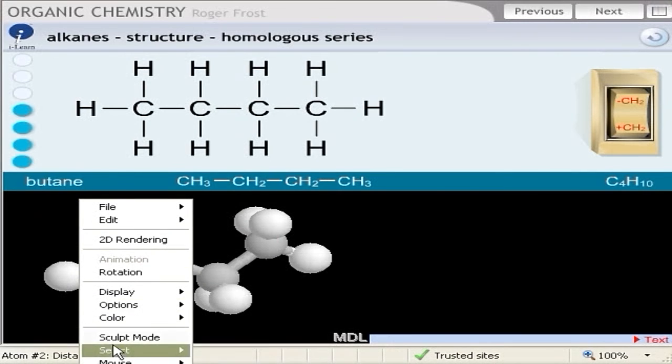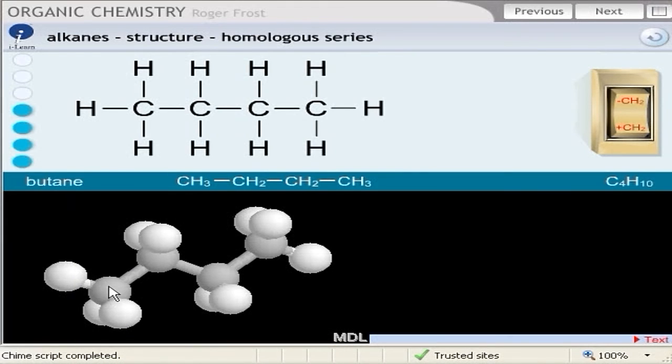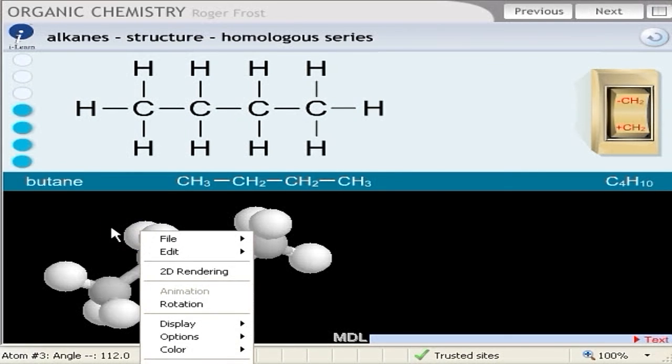Another click, a right click this time and choose angle. Again you can't see me choosing angle but if I click on three atoms, one, two, three balls in a row, then the angle between those balls is computed there for you.